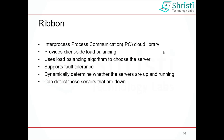Ribbon is a Netflix OSS library, also called as Interprocess Communication Cloud Library. How does Ribbon choose a particular service running on a particular server? For that, Ribbon uses certain specific load balancing algorithms. There are a few things you need to understand when working with Ribbon: the algorithms or rules that Ribbon uses, how dynamically Ribbon picks and chooses a particular list of servers, and the ping URL.